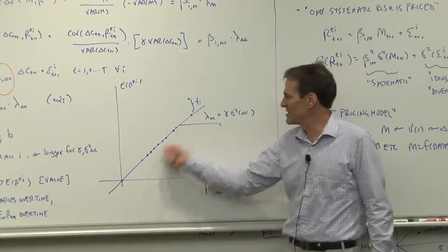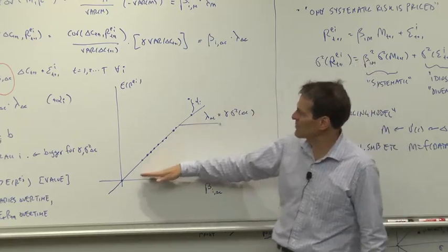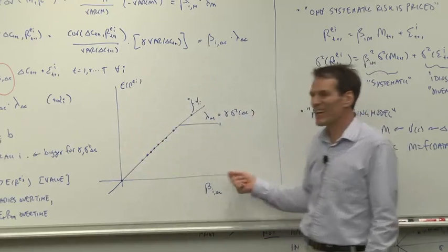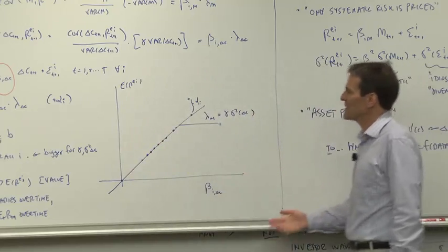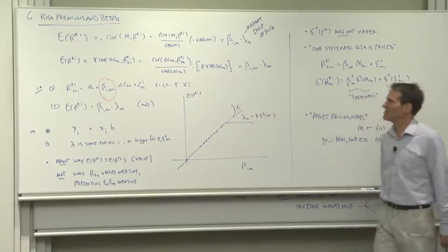Other securities, when consumption growth goes up and down, they have whatever betas they have. But their expected returns should line up with their betas. The ones with higher tendency to fall in bad times have to pay their investors higher expected returns to get those investors to hold them.